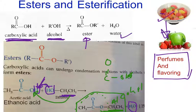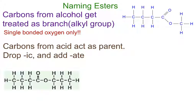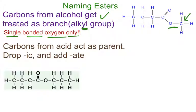But if you put some carbon there, you now have an ester. In terms of naming esters, the carbons from the alcohol get treated as a branch or alkyl group, which have a -YL suffix ending. The carbons from the alcohol are always attached to a single-bonded oxygen only. This carbon right here is attached to single-bonded oxygen only — it came from the alcohol. These carbons right here are attached to single-bonded oxygen only — they came from the alcohol.